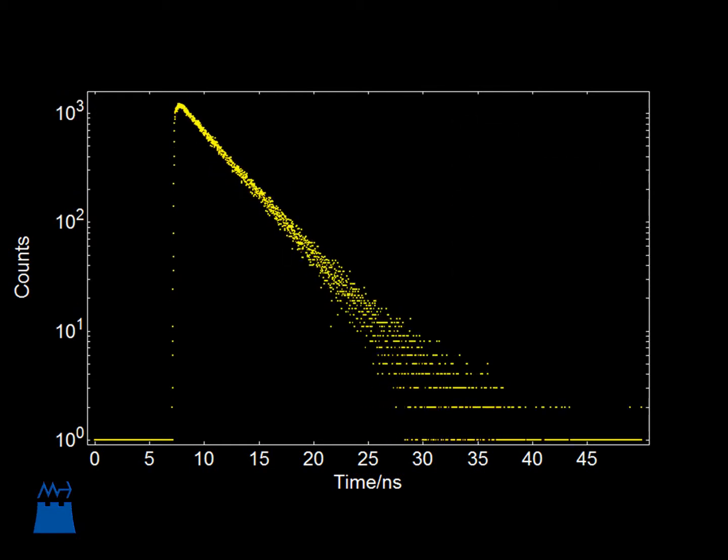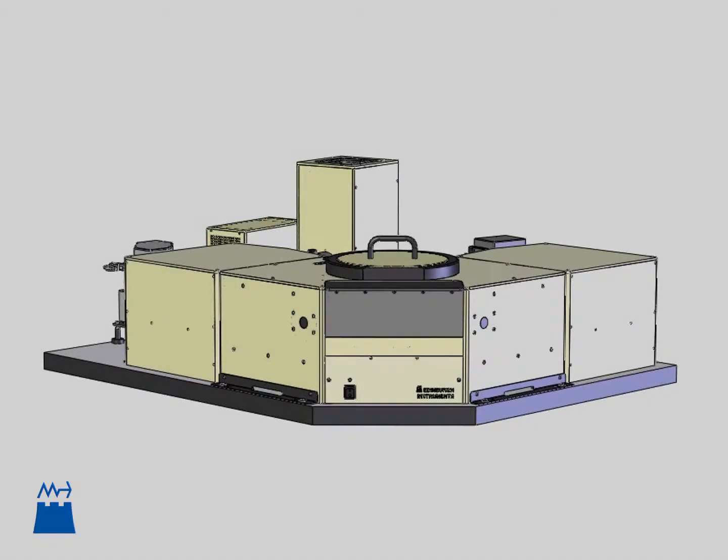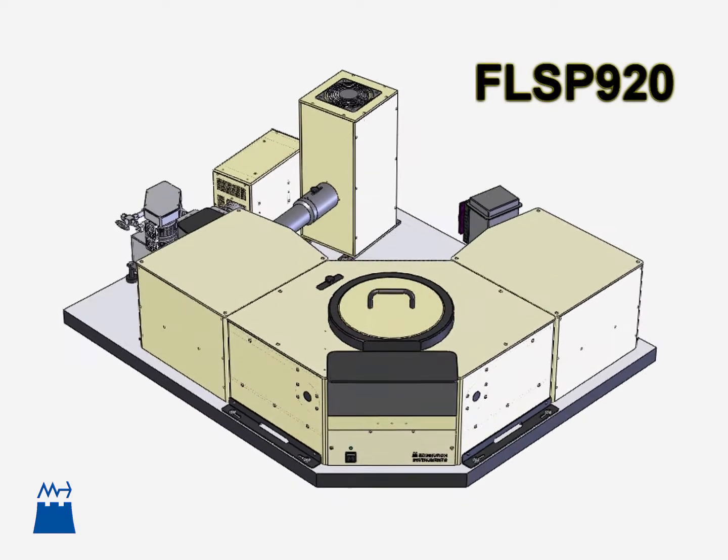Edinburgh Instruments is a company located in Scotland which produces such technology, with one of its top spectrometers being called the FLSP920.